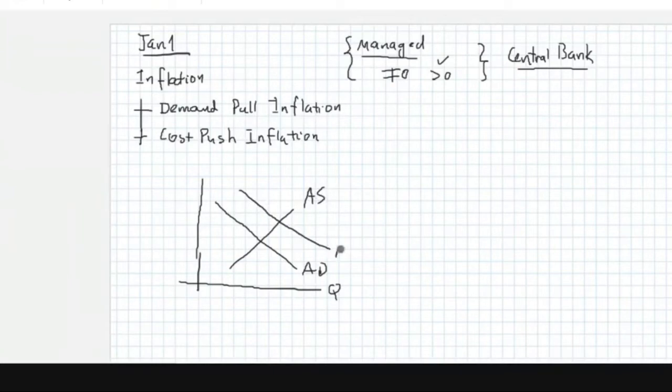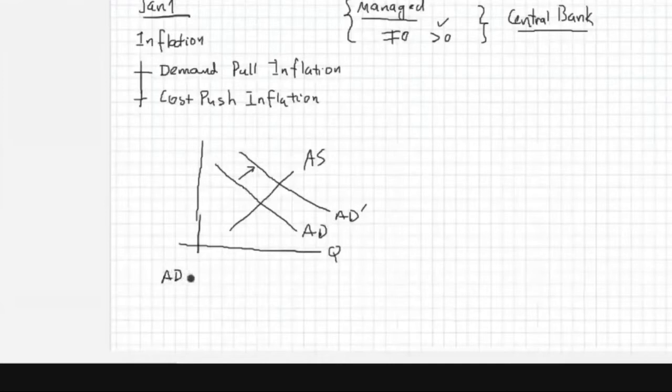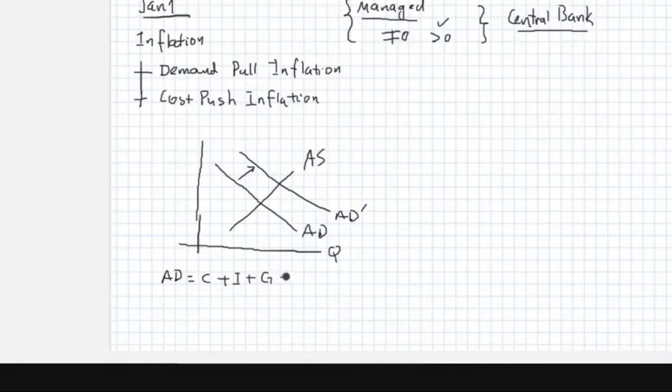And we knew that inflation can be created by rising demand. And we realized in the last class that demand can be - remember, aggregate demand is equal to C plus I plus G minus...